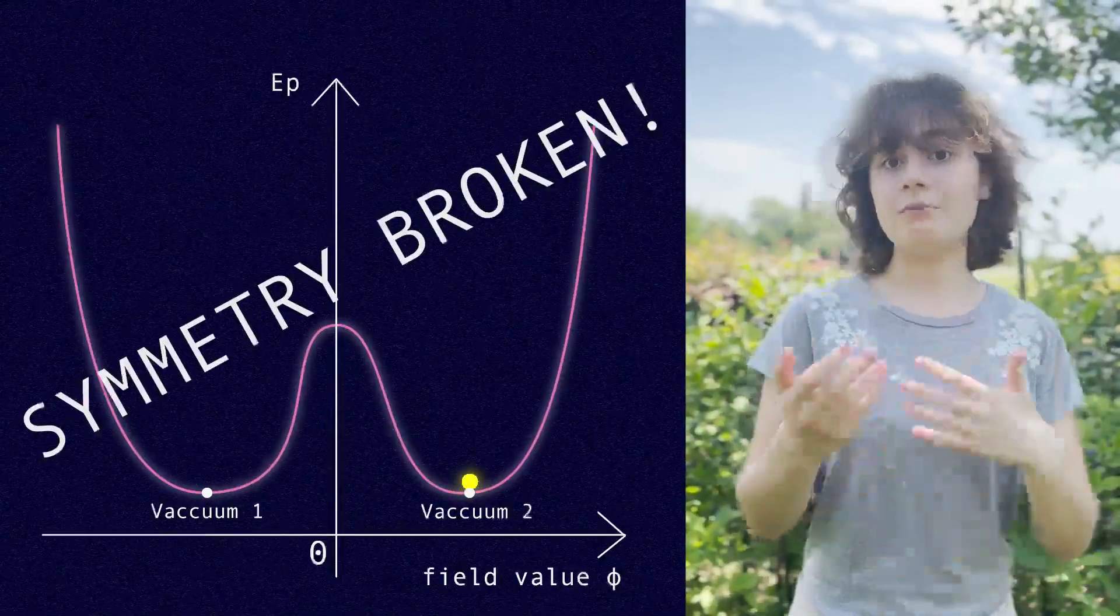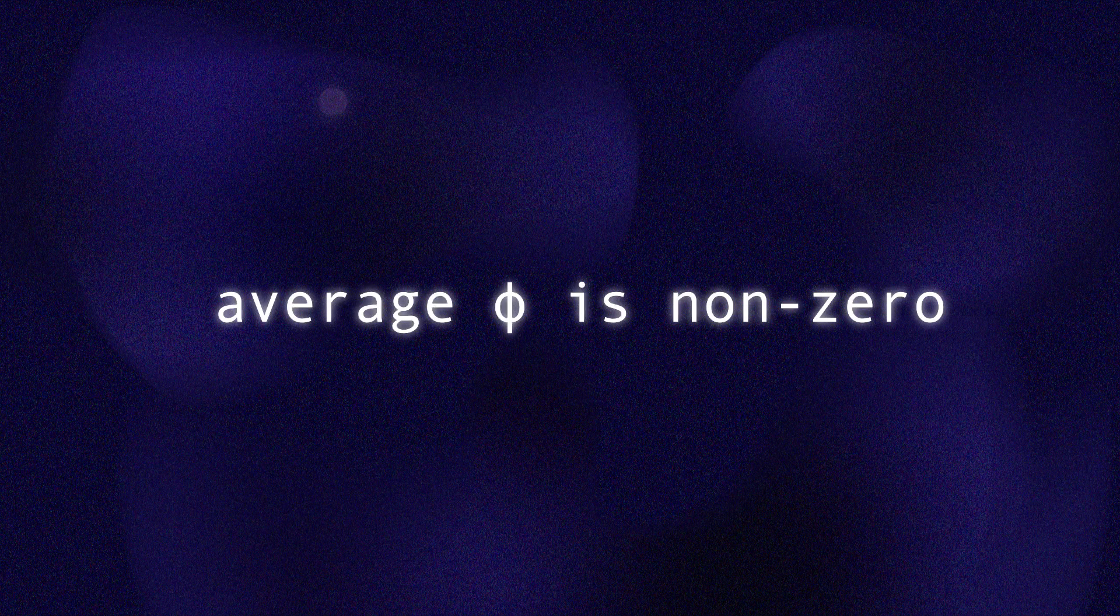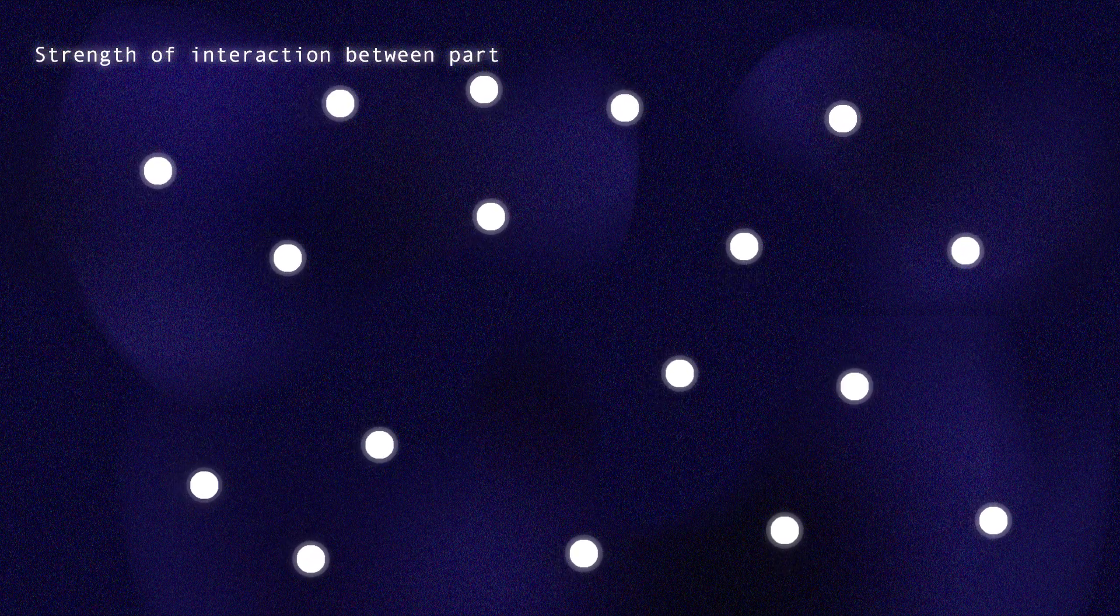So, the overall energy distribution remains the same. As a result, the most stable state has an average non-zero field value, allowing the Higgs field to interact with other particle fields.